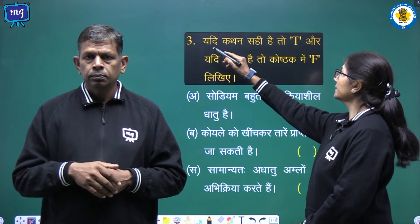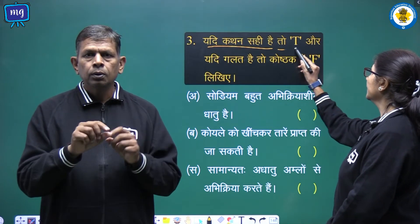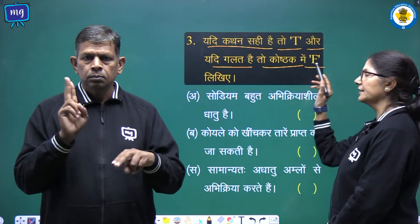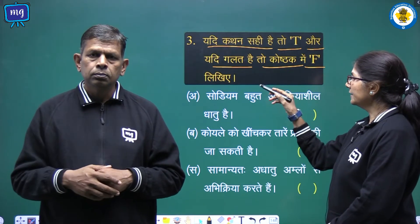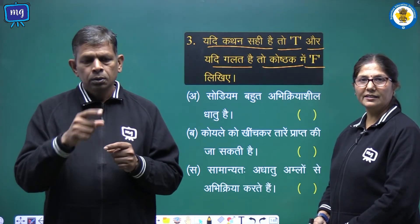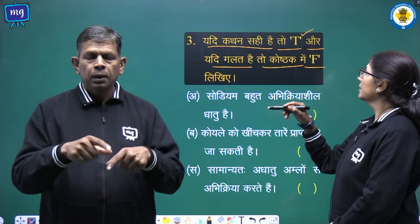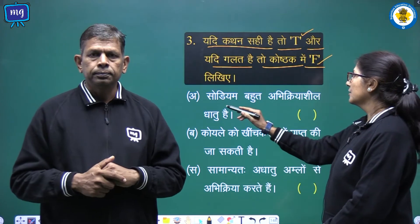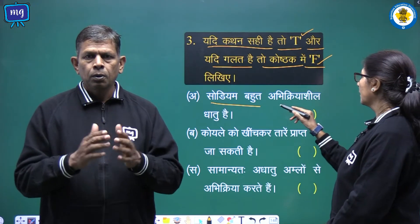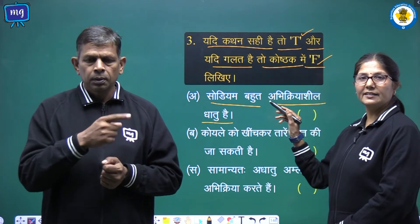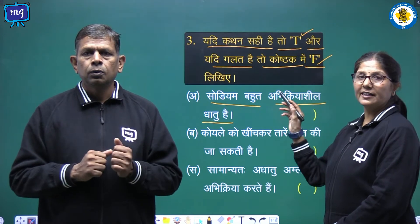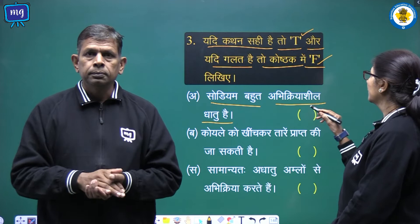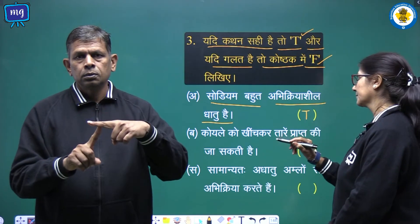Number 3: if the statement is correct then write T, and if it is wrong write F in the circle. Children, if the answer is correct we will write T in the circle, and if it is wrong then F. Sodium is very reactive - this is correct, so what will we write here? T.